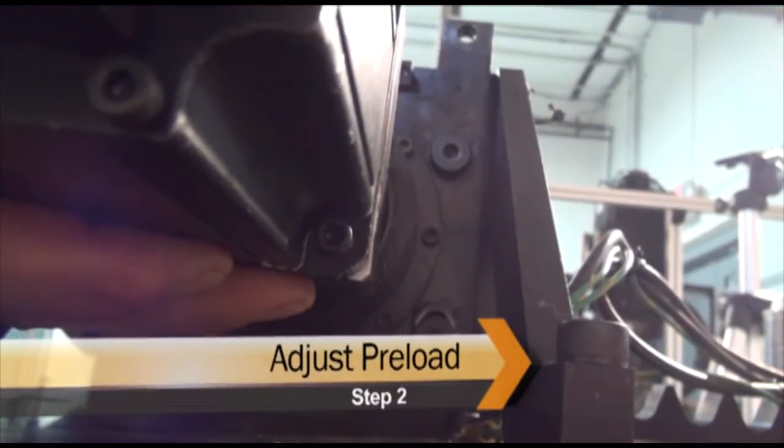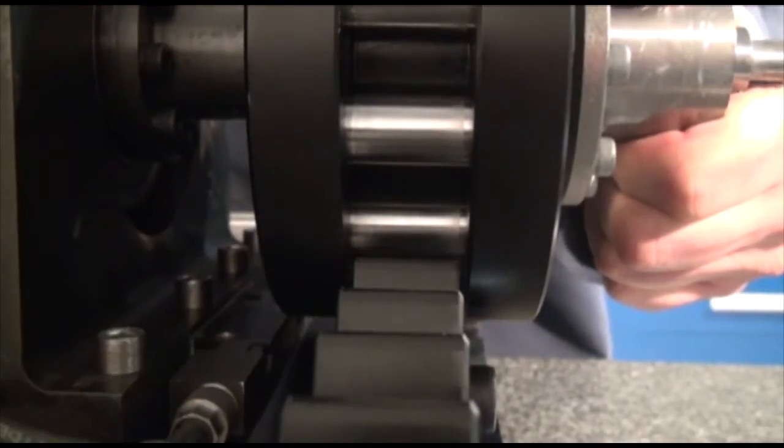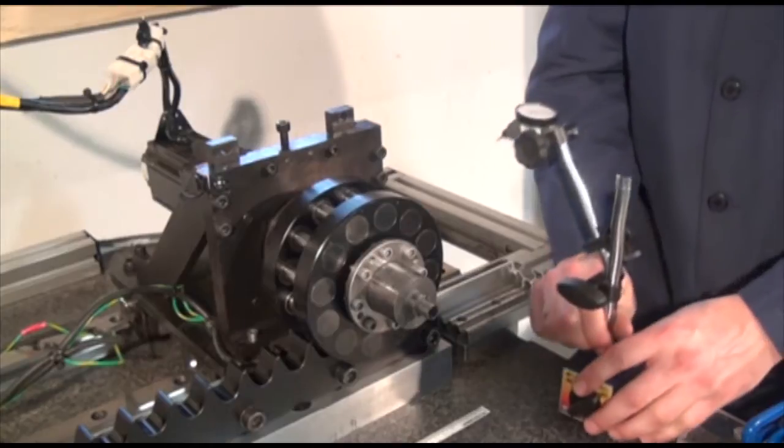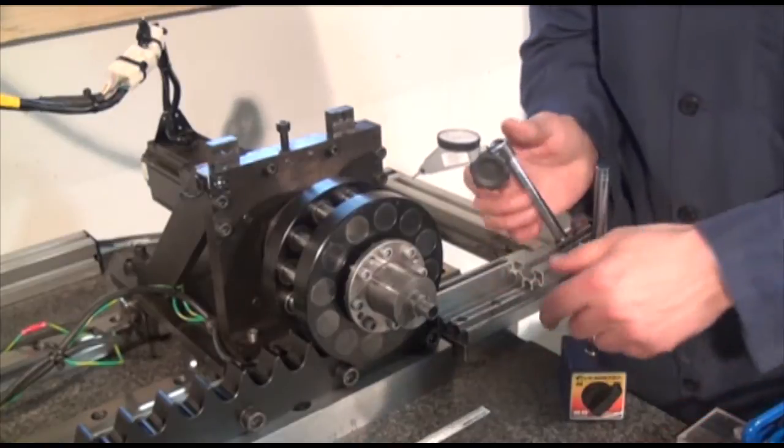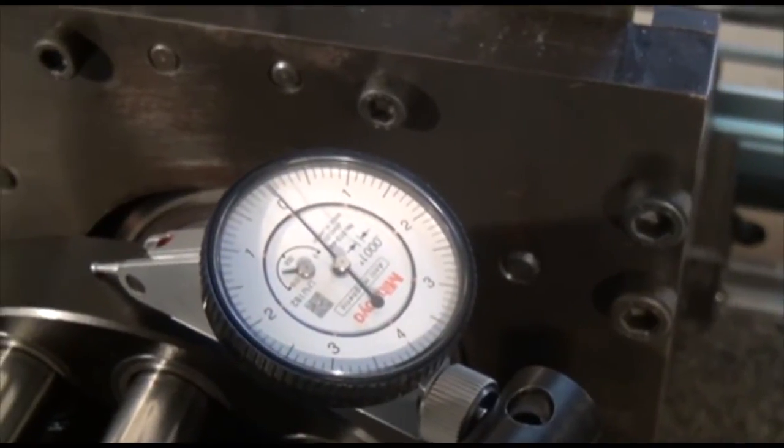The preload plate has adjustability, giving the pinion the ability to move in and out. Position a dial indicator on the center of the pinion roller or on top of the pinion body.